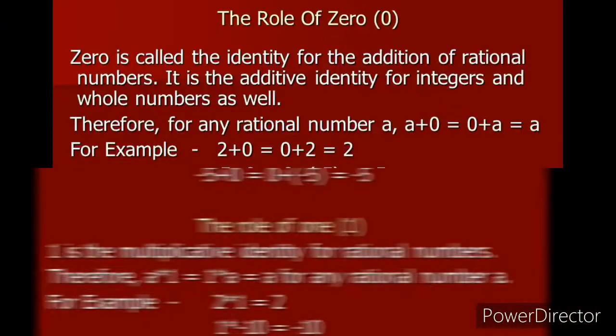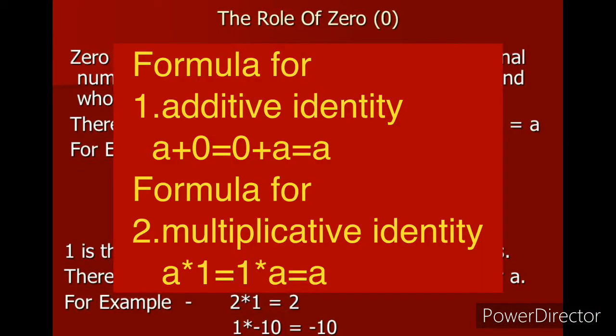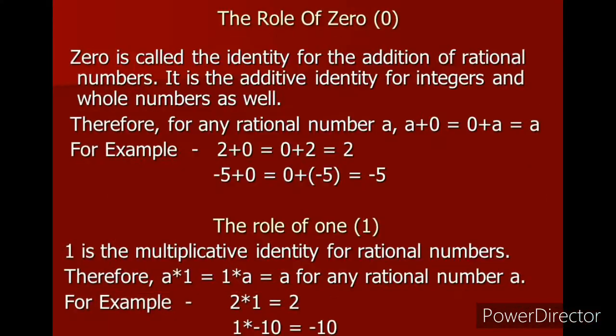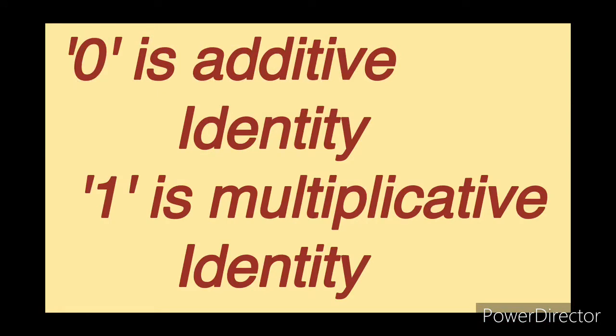Next is your role of 0 and role of 1. Formula for the additive identity is a plus 0 equals to 0 plus a equals to a. And formula for multiplicative identity: a into 1 equals to 1 into a equals to a. You can see the examples here. Next, 0 is called additive identity, 1 is called multiplicative identity.